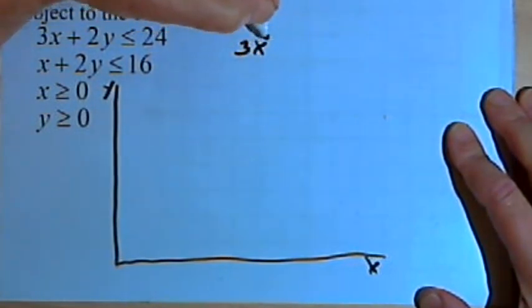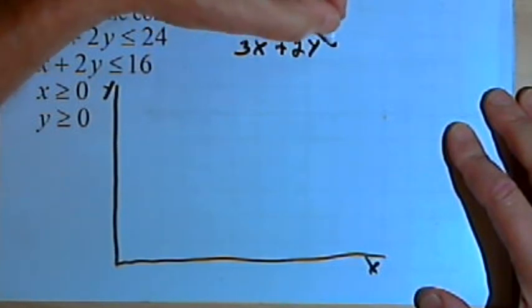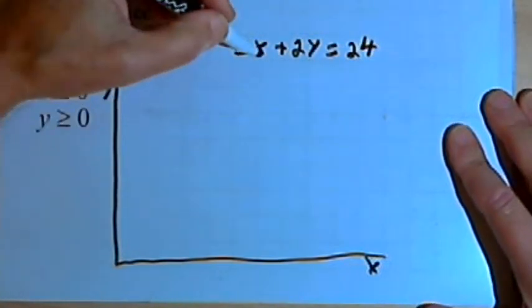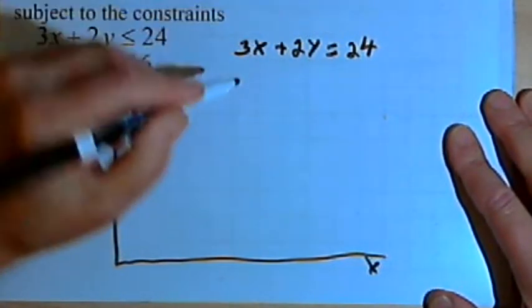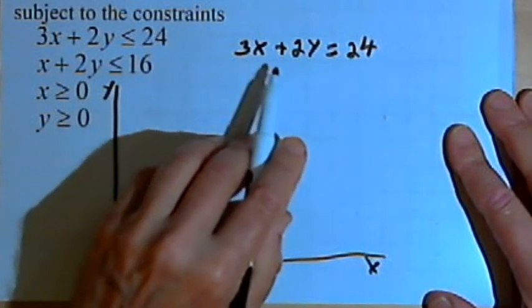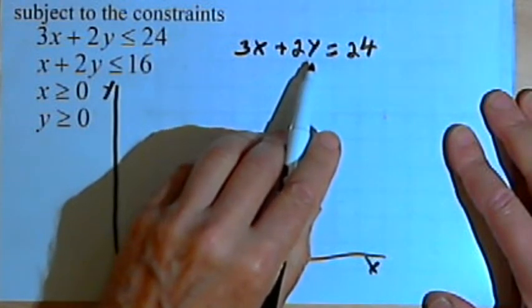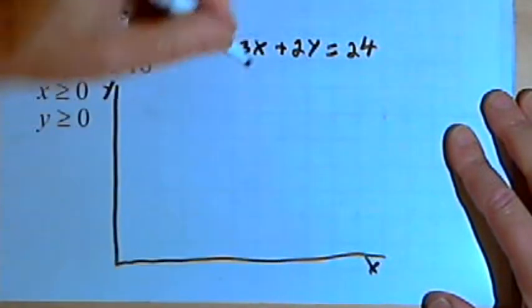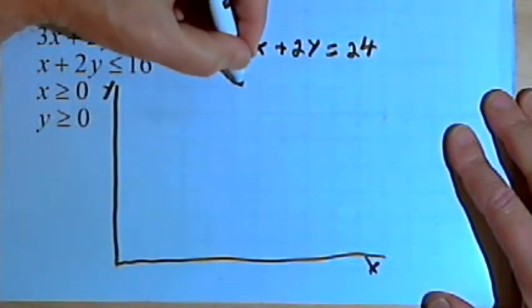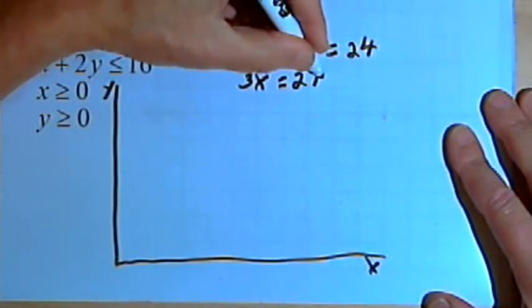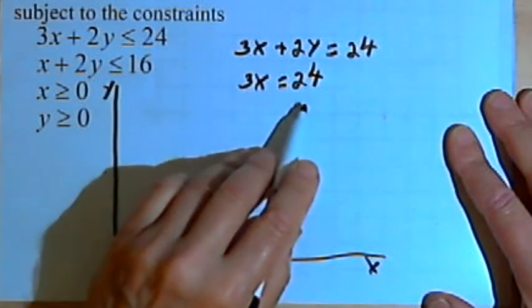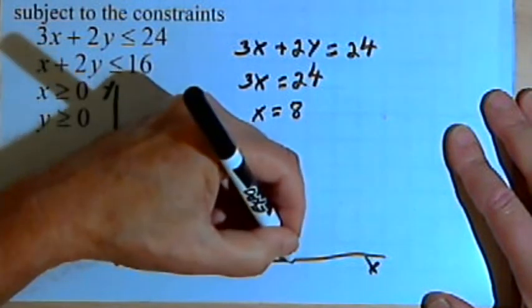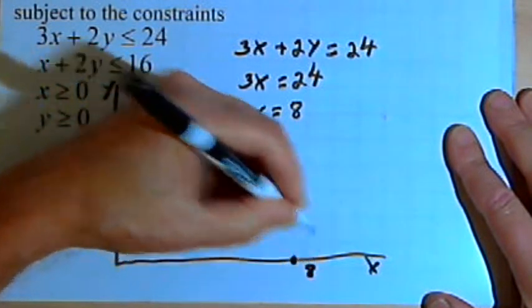I'm going to take the inequality and turn it into an equation: 3x plus 2y equals 24. Then I'll find the x and y intercepts for this equation. I can find the x intercept by setting y equal to 0, since everywhere along the x-axis y is equal to 0. So if y was 0, I would have 3x equals 24. When I divide both sides by 3, I get x equals 8. So my x-intercept is at x equals 8.